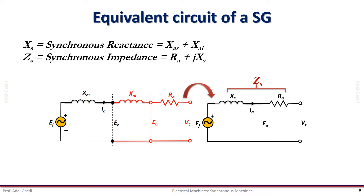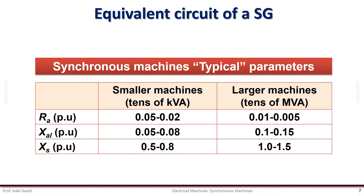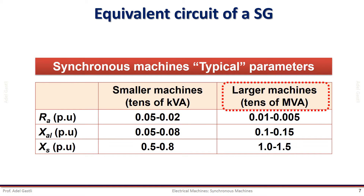So now we have a simple equivalent circuit that represents the armature of the synchronous generator. Typical per unit values that represent an order of magnitudes are given in this table, where smaller machines refer to tens of kilovolt amp power ratings and larger machines refer to tens of megavolt amp power ratings. The ranges of the parameters are provided in per unit. Recall that 0.1 per unit impedance means that if the rated current flows, it will produce a voltage drop of 10% of the rated voltage. In general, as the machine size increases, the per unit resistance decreases but the per unit reactance increases.